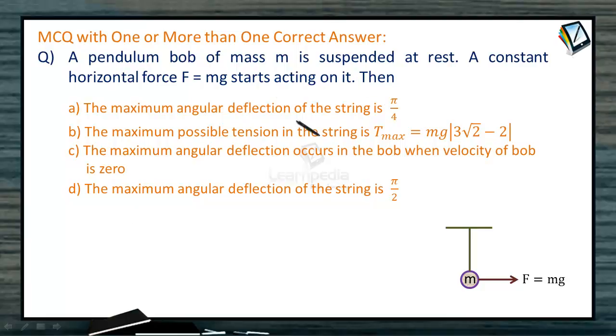Then maximum angular deflection of the string is pi by 4. Maximum possible tension in the string T_max is Mg(3√2 - 2). Maximum angular deflection occurs in the bob when velocity of bob is zero. Maximum angular deflection of the string is pi by 2.